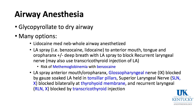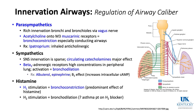Innervation of the airways: parasympathetics richly innervate the bronchi and bronchioles, releasing acetylcholine onto muscarinic receptors, causing bronchoconstriction. Ipratropium is the inhaled anticholinergic used by many COPD patients to open their airways. Sympathetics have sparser innervation, but circulating catecholamines act on beta-2 receptors in the bronchi, causing bronchodilation. We give albuterol and IV epinephrine for their beta-2 effect, increasing intracellular cyclic AMP.